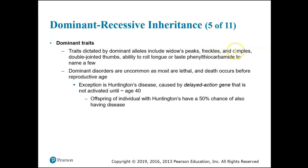Freckles are a dominant trait. Dimples are a dominant trait. Double jointed thumbs. The ability to roll the sides of your tongue up — that's what is meant by roll your tongue. You can either do that or you can't. You can't train yourself to do it. It's a gene that allows you to roll the sides of your tongue up or not.